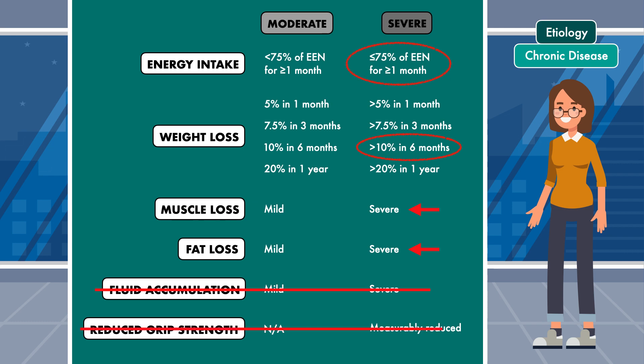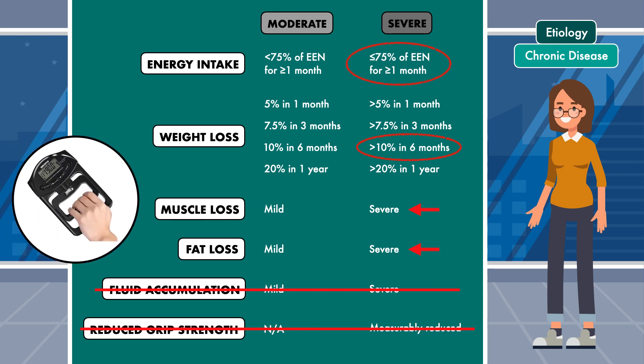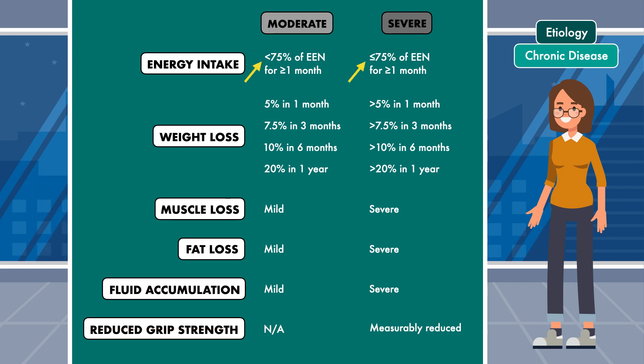Last but not least, you didn't observe any fluid accumulation or reduced grip strength. To include reduced grip strength, you must obtain a measurement using a handgrip dynamometer — it should never be a subjective measurement. It's also worth noting that there may be a mistake in the consensus statement from the Academy and Aspen: they put "less than or equal to" in front of severe malnutrition but just "less than" in front of moderate malnutrition. This means a patient who falls under severe could be eating better than a patient under moderate, which clearly shouldn't be the case.